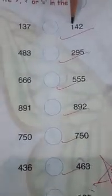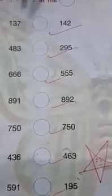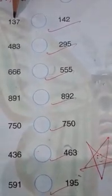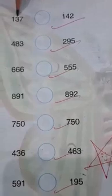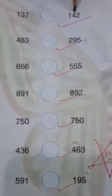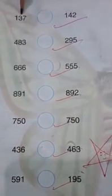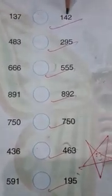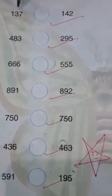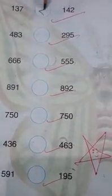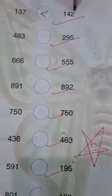Now read with me: 137, 142. The numbers in the 100s place are the same. In the 10s place we have 3 tens and 4 tens, and 3 tens is less than 4 tens. So 137 is less than 142.